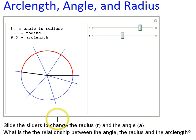I'm going to try something. The arc length is equal to the radius times the angle.